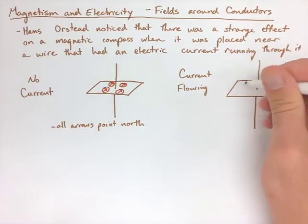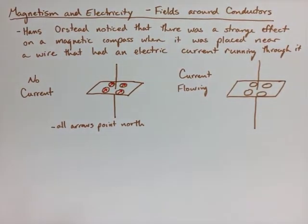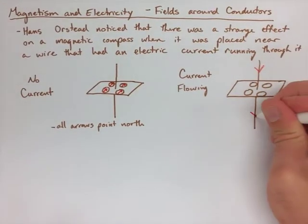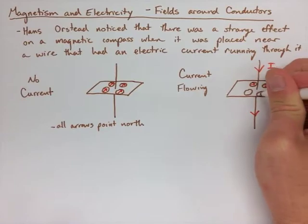When we make our wire and we have our compasses, and we point the current down now going through the wire, all the arrows in the compasses actually align themselves into a circle.